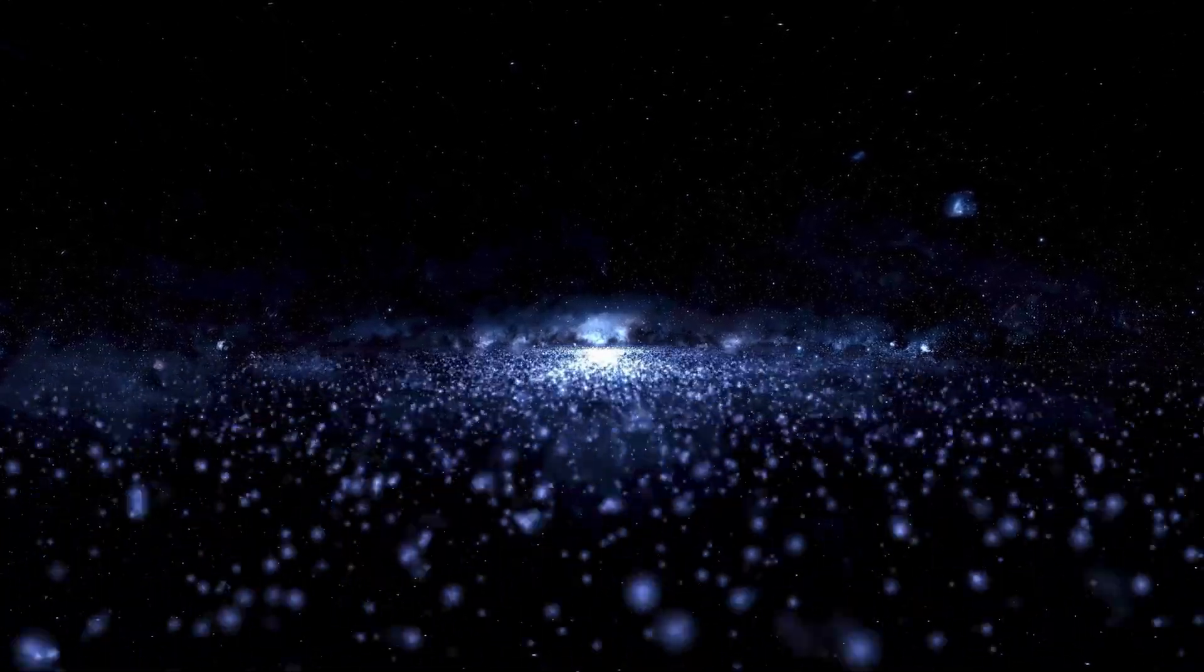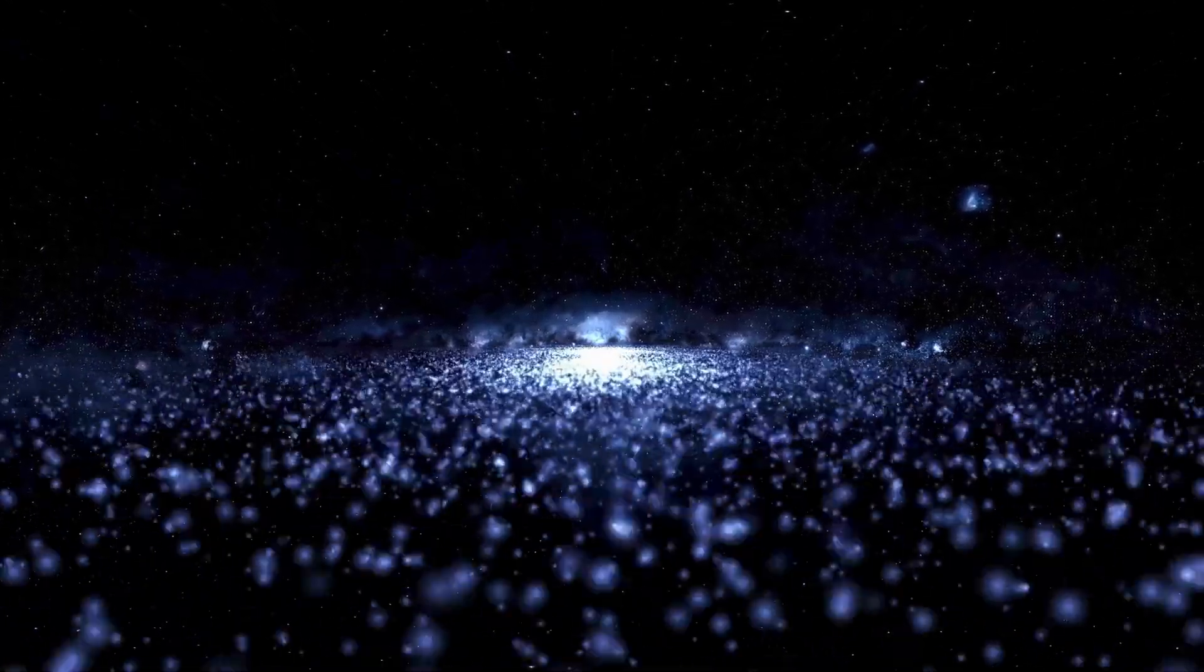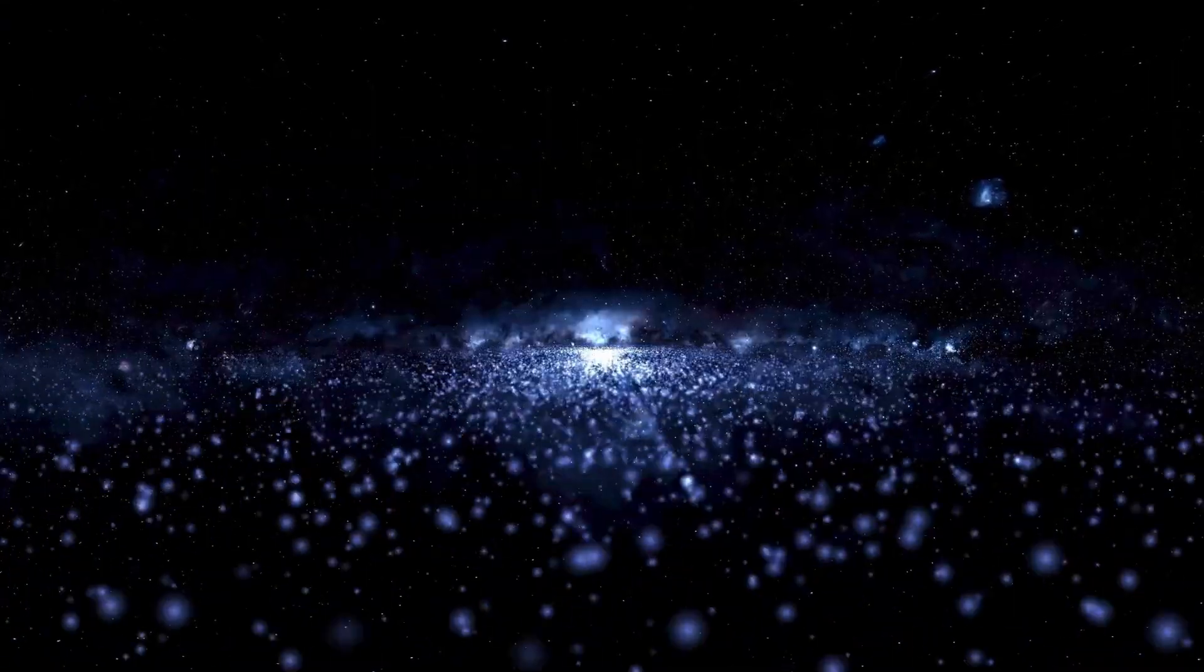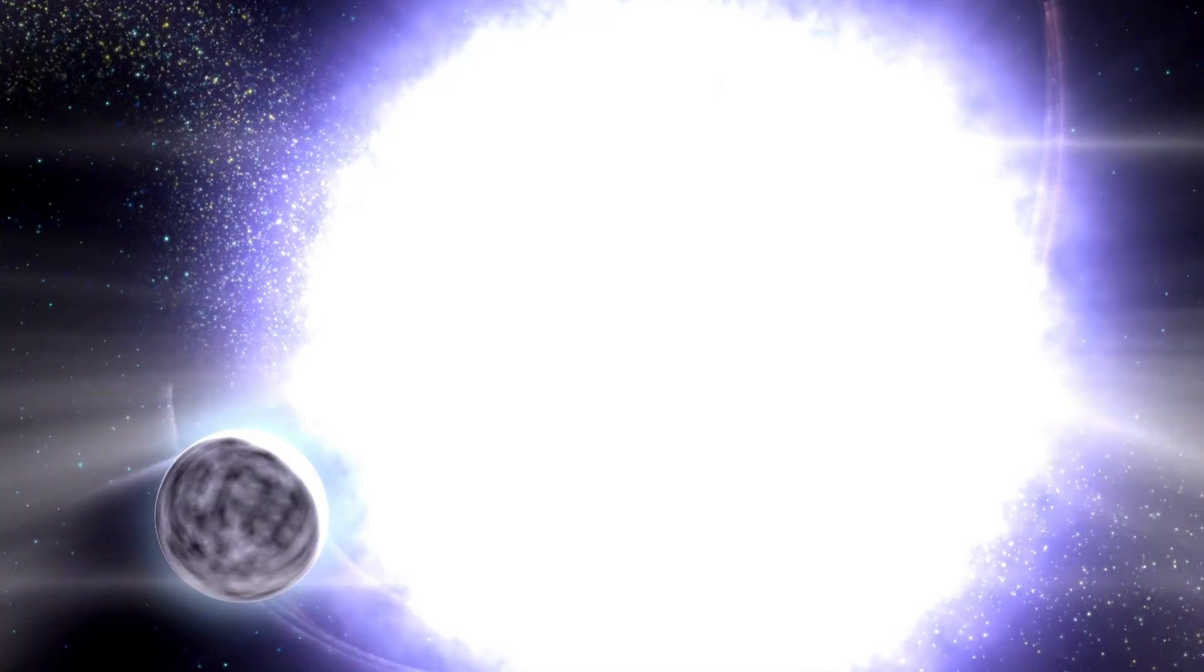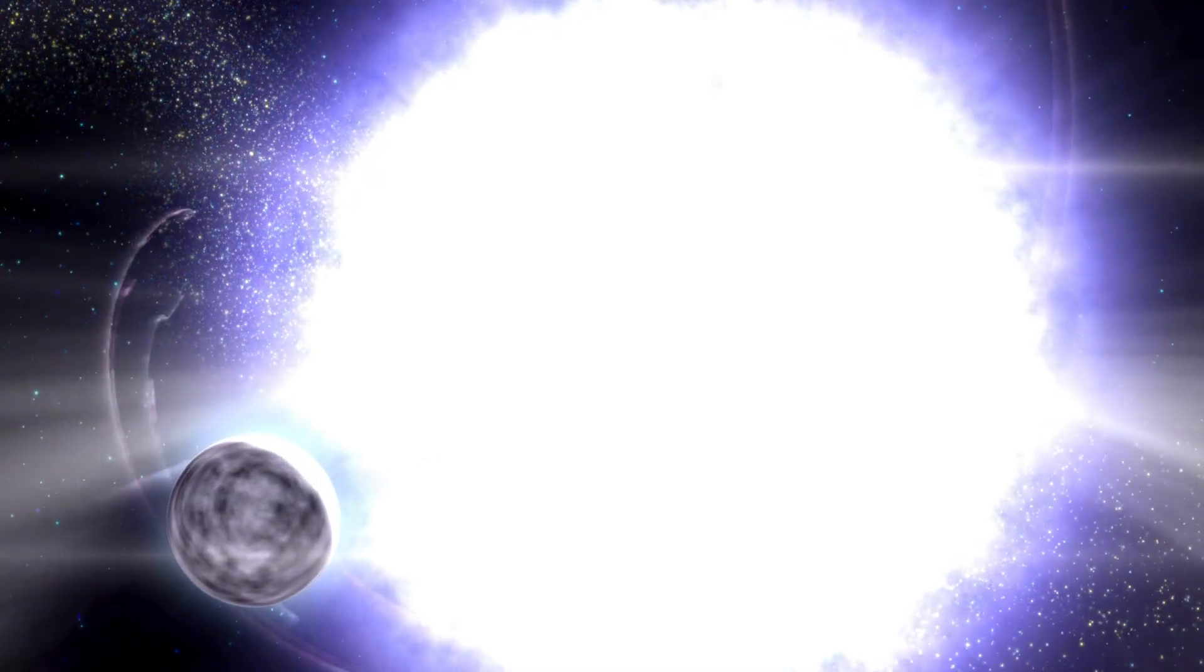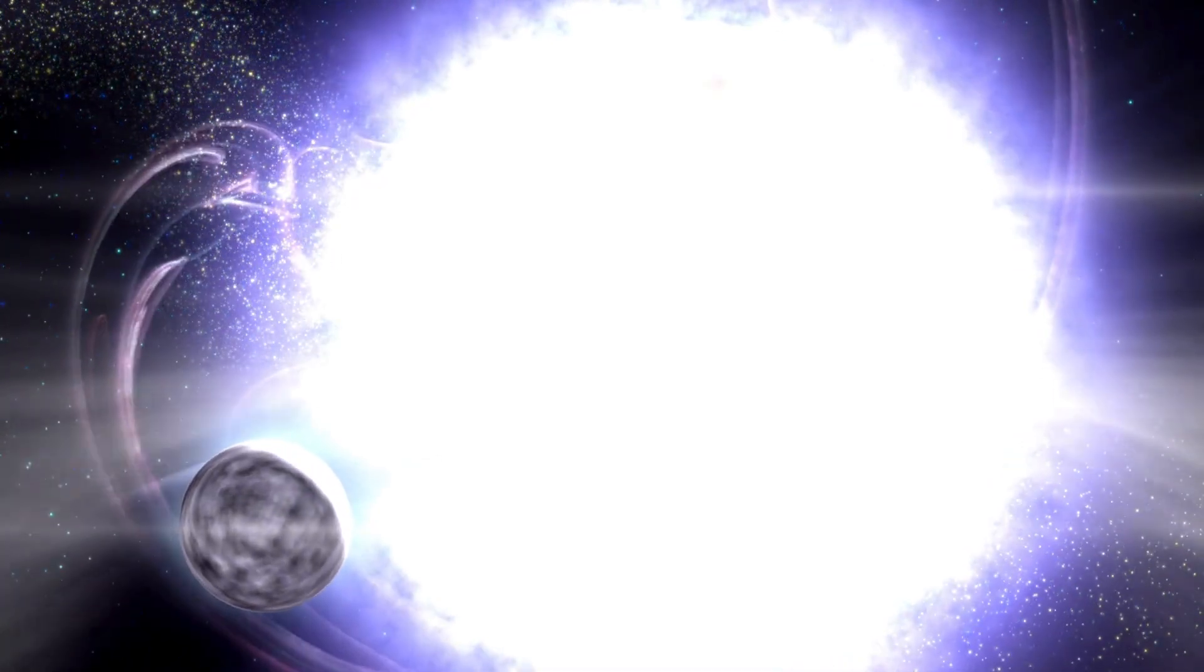However, its size is not the only thing that makes it noteworthy. Betelgeuse is at the very end of its life cycle, in a phase known as the red supergiant phase, where it is expanding and cooling after billions of years spent fusing hydrogen into helium in its core.